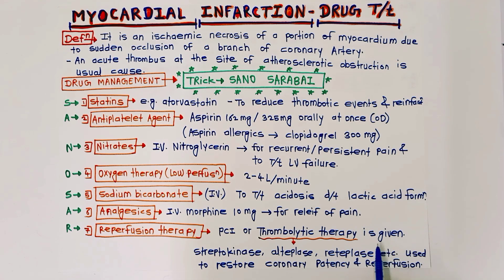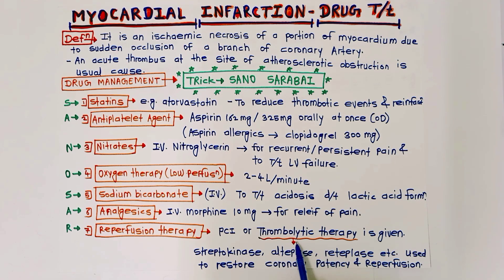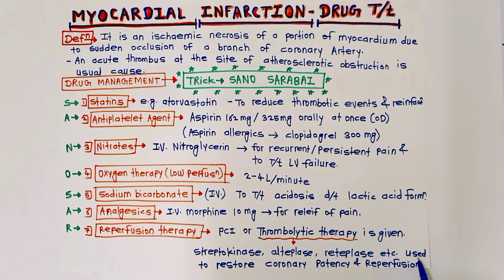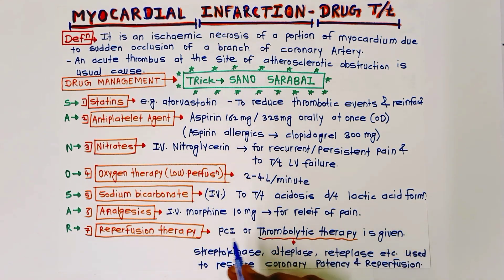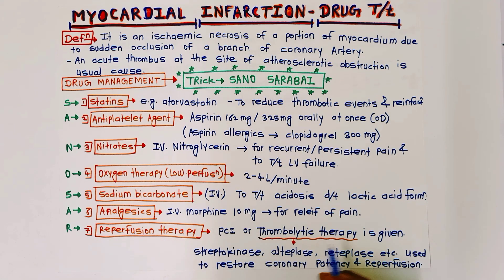R for reperfusion therapy: in this condition, PCI technique or thrombolytic therapy is given. In thrombolytic therapy, streptokinase, alteplase, reteplase, etc. are used to restore coronary patency and reperfusion. The most important drug here is streptokinase.